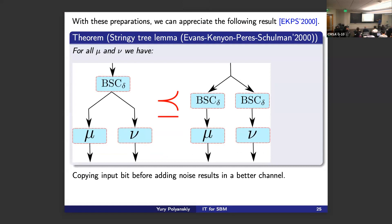The way we prove things is by associating to every BMS channel a convex monotonically increasing curve — we call it the beta curve — which is basically the probability of error under different priors on the input. In a certain reparameterization you get a convex curve where degradation corresponds to one curve being above another. Degradation exactly corresponds to one channel having a strictly better probability of error for all priors. Our proof goes through analysis of different edge cases.